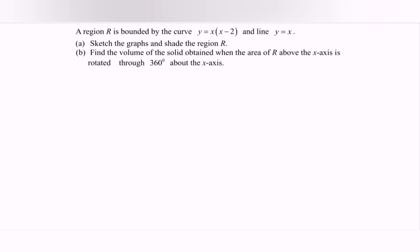Part A: Sketch the graph and shade the region R. Part B: Find the volume of the solid obtained when the area R above the X axis is rotated through 360 degrees about the X axis.